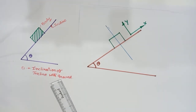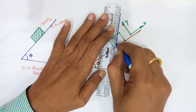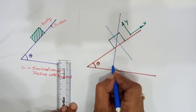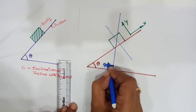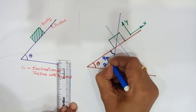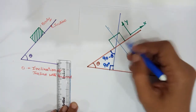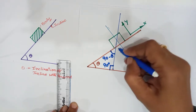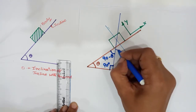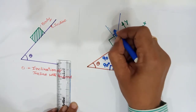The weight always acts perpendicular to the ground, that is at 90 degrees. This means the angle between the weight and the normal to the incline becomes 90 minus theta. Since the normal is perpendicular to the incline — making 90 degrees with it — and this angle is 90 minus theta, the remaining angle becomes theta. So both the angle between the weight and the incline, and the angle shown here, are theta.